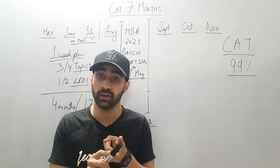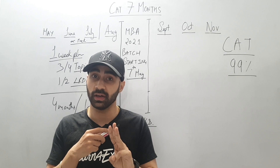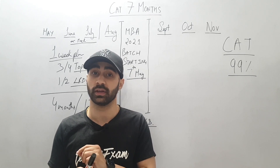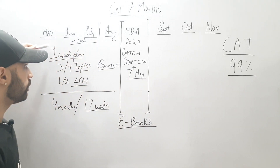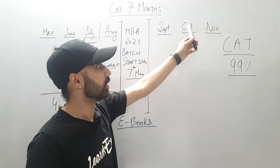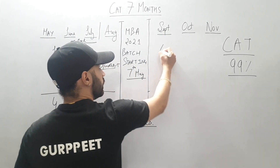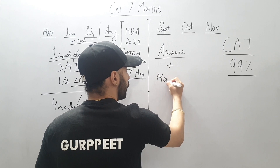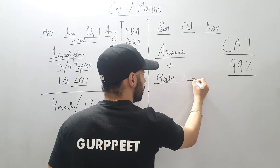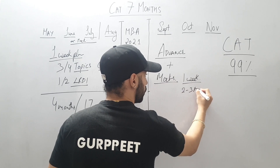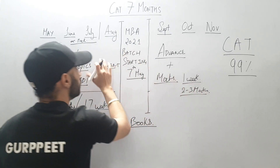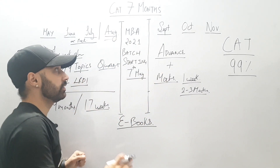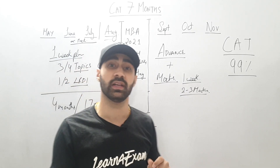If you are preparing for CAT, IFT, or XAT, then in the later months you do advanced practice and advanced questions. Plus you give mocks — and the frequency of mocks increases here. In one week during this phase you give 2 to 3 mocks. Before that, in August, you can start with one mock per week — totally up to you. And for practice resources, you can also go for e-books.